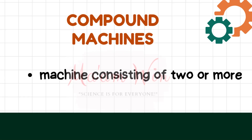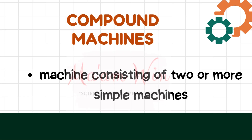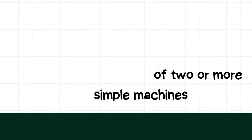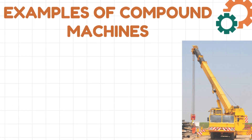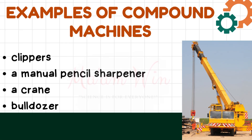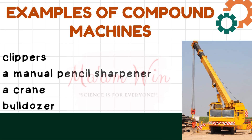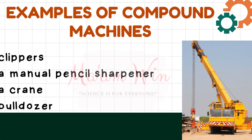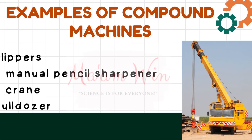When we say compound machines, it is a machine that consists of two or more simple machines. Examples of compound machines are the following.